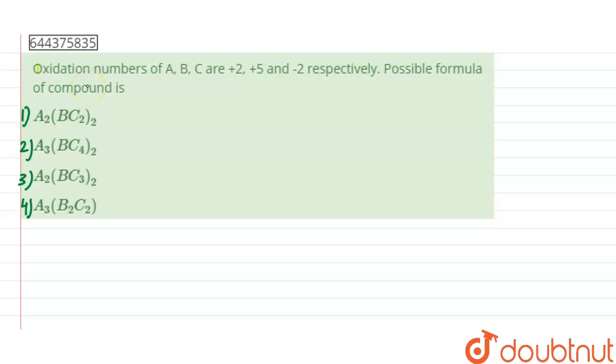Hello guys, the given question says oxidation number of A, B, C are plus 2, plus 5 and minus 2 respectively. Possible formula of the compound is. Now in the given option, all the compounds are neutral, which means the total charge on the compound should be 0.